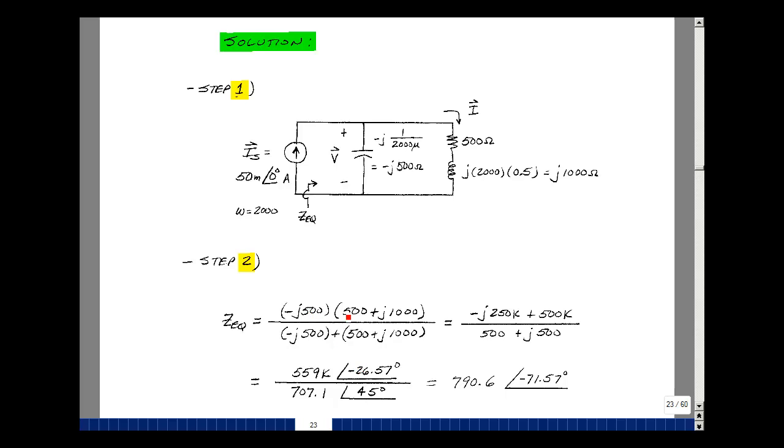So this times this is a minus 250,000 times J with a minus sign. And then this times this is going to be 500,000. I get a J squared and then I get a minus one. So those two cancel and I get a plus sign. Then in the denominator, I've got 500 plus J 1,000 minus J 500. So plus J 500.